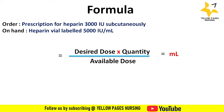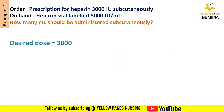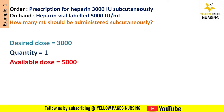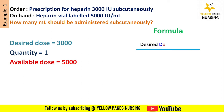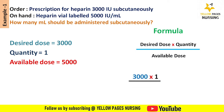As per the example, the desired dose is 3000 (the doctor's order), the quantity is 1 (the volume of heparin available on hand), and the available dose is 5000 (the strength of heparin available). Applying all values into the formula — desired dose multiplied by quantity divided by available dose — we get the answer: 0.6 ml.